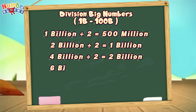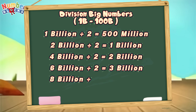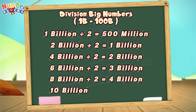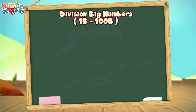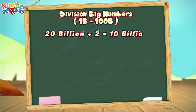6 billion divided by 2 is equal to 3 billion. 8 billion divided by 2 is equal to 4 billion. 10 billion divided by 2 is equal to 5 billion. 20 billion divided by 2 is equal to 10 billion.